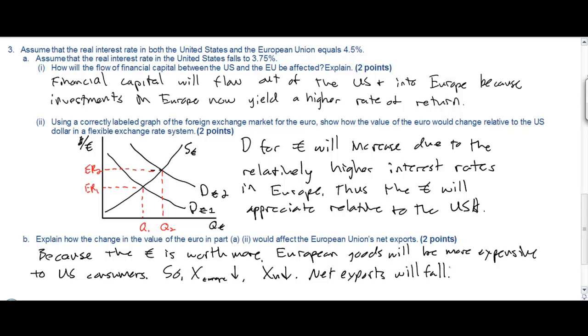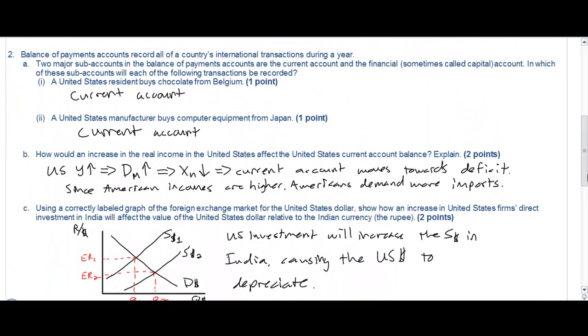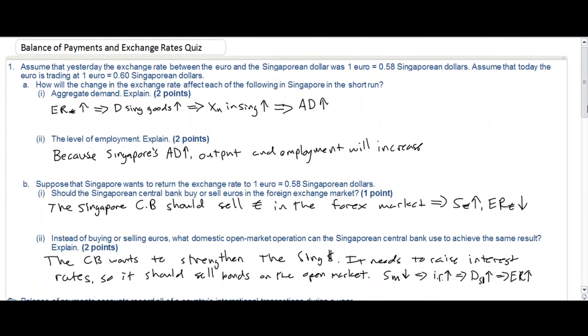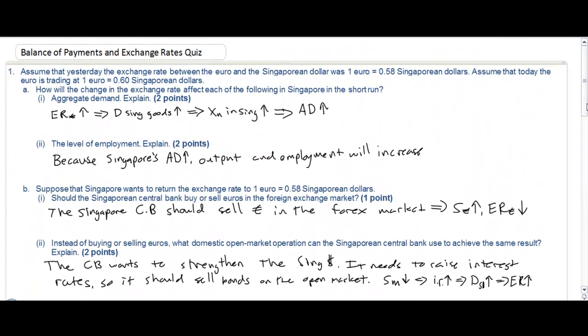So that wraps up the third answer. Pause the video. Look over the solution. Rewind. Listen to the explanation. We'll have one more quick look at numbers two and number one. Pause the video anywhere you need to to review these answers. These are just two of the several free response questions available on balance of payments and exchange rates from the college board.